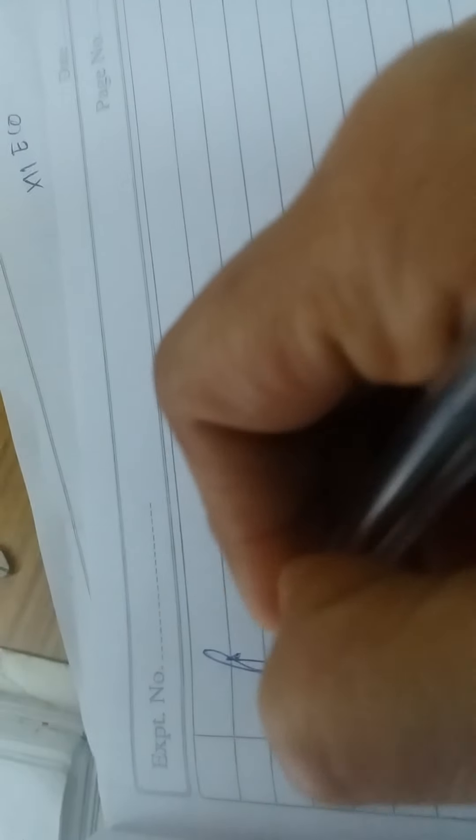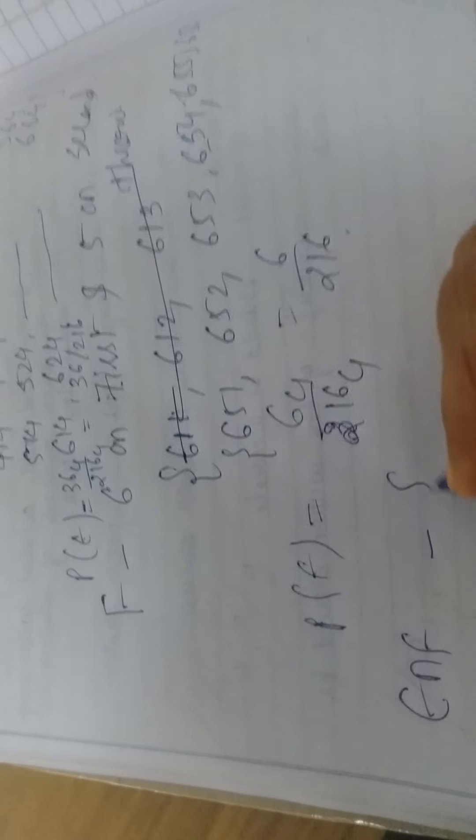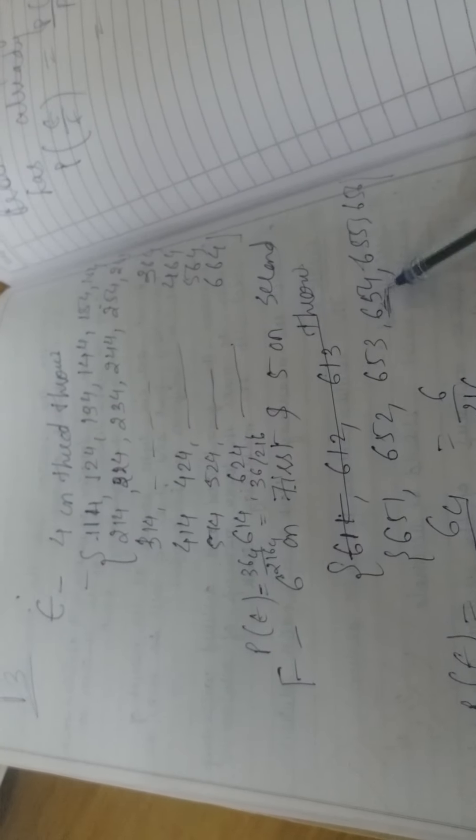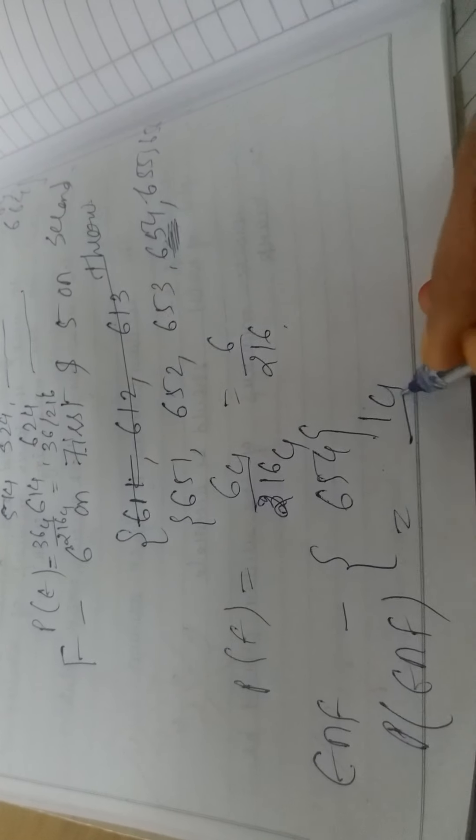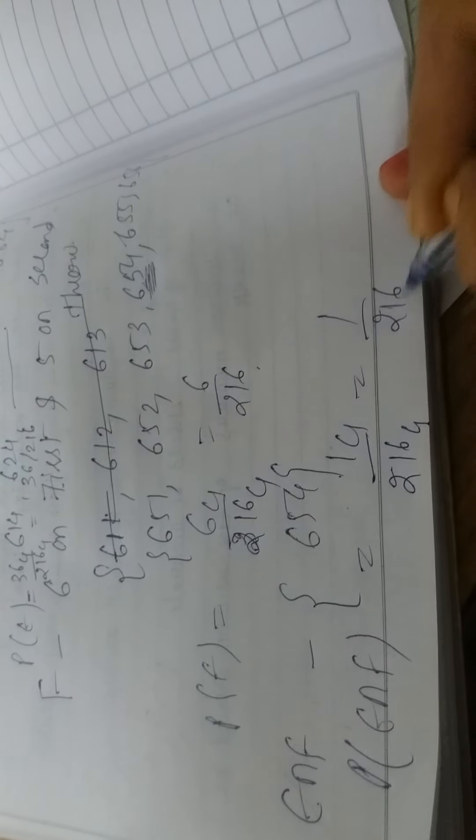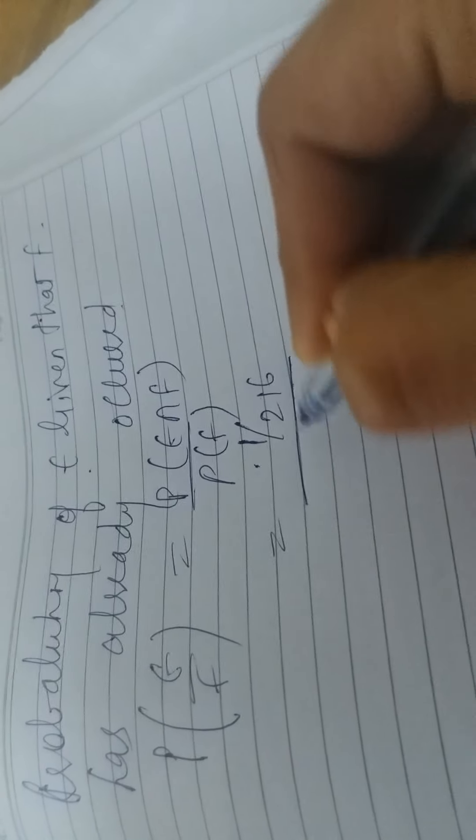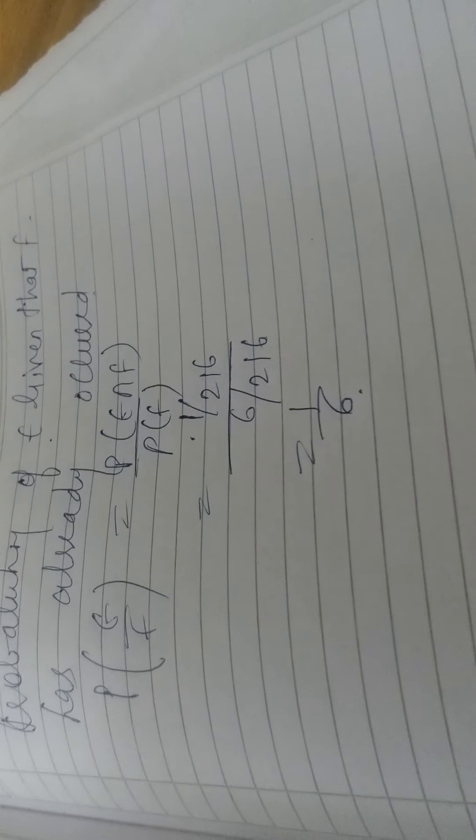Now to find probability of E given that F has already occurred. That is P of E by F equals E intersection F upon PF. E intersection F we haven't calculated. Let me calculate E intersection F. Look carefully, common in both. In last position there should be 4 only. E is 6, 5, 4. So probability of E intersection F is 1C1 upon 216C1 that is 1 by 216. So it will be 1 upon 216 and 6 upon 216 that is 1 by 6. That will be your answer.